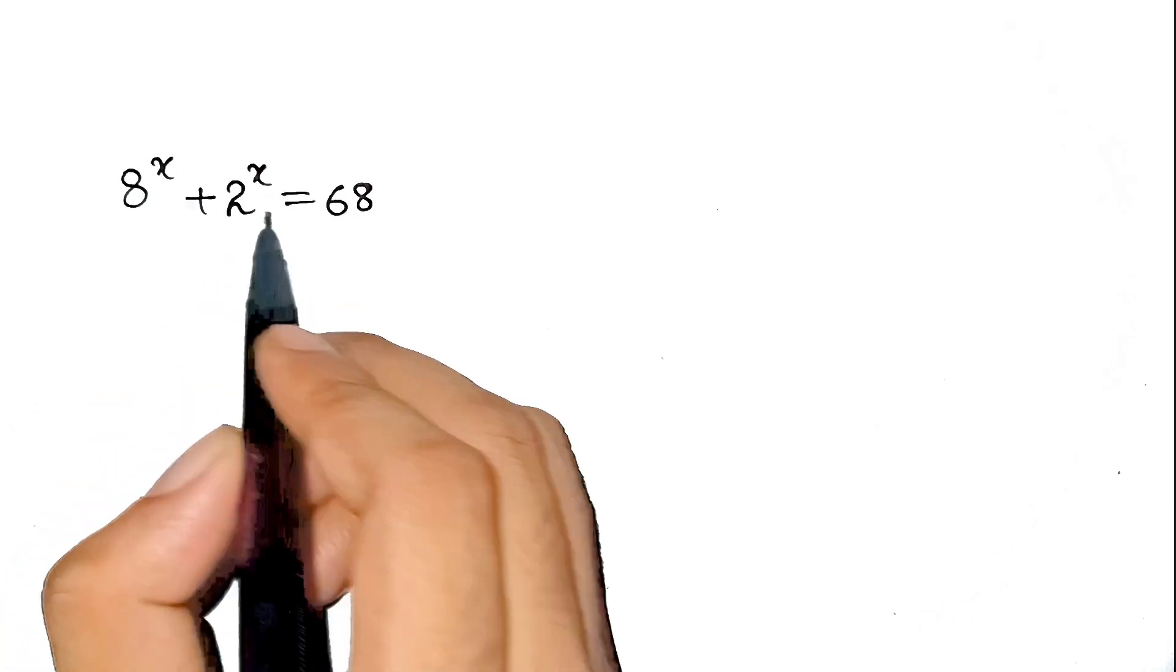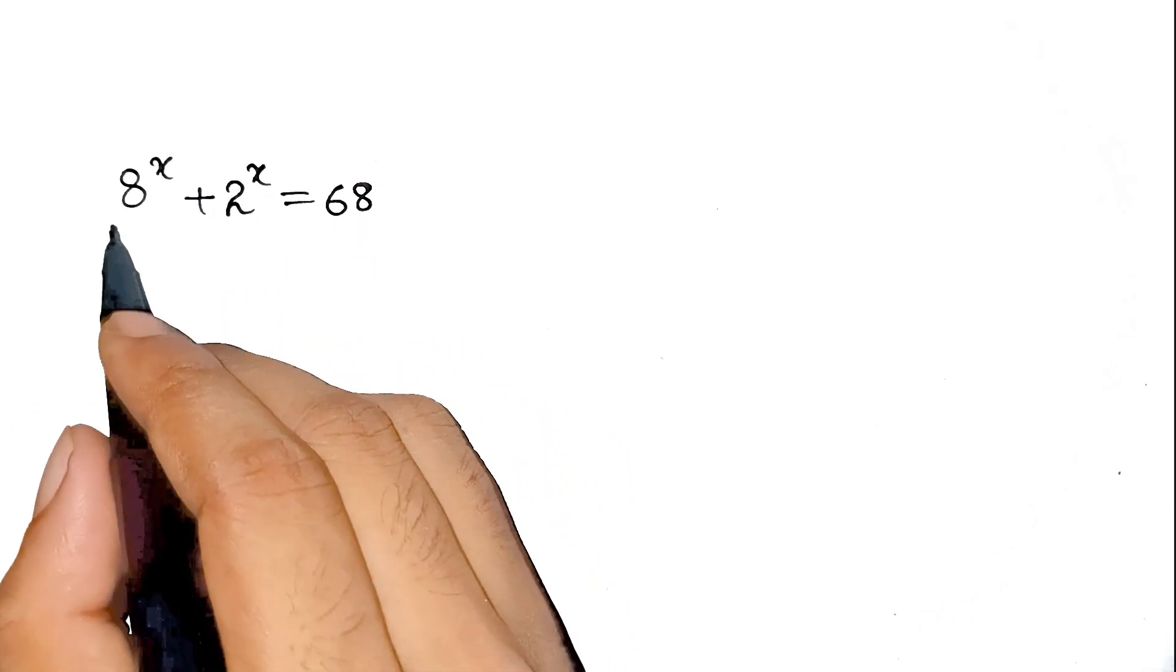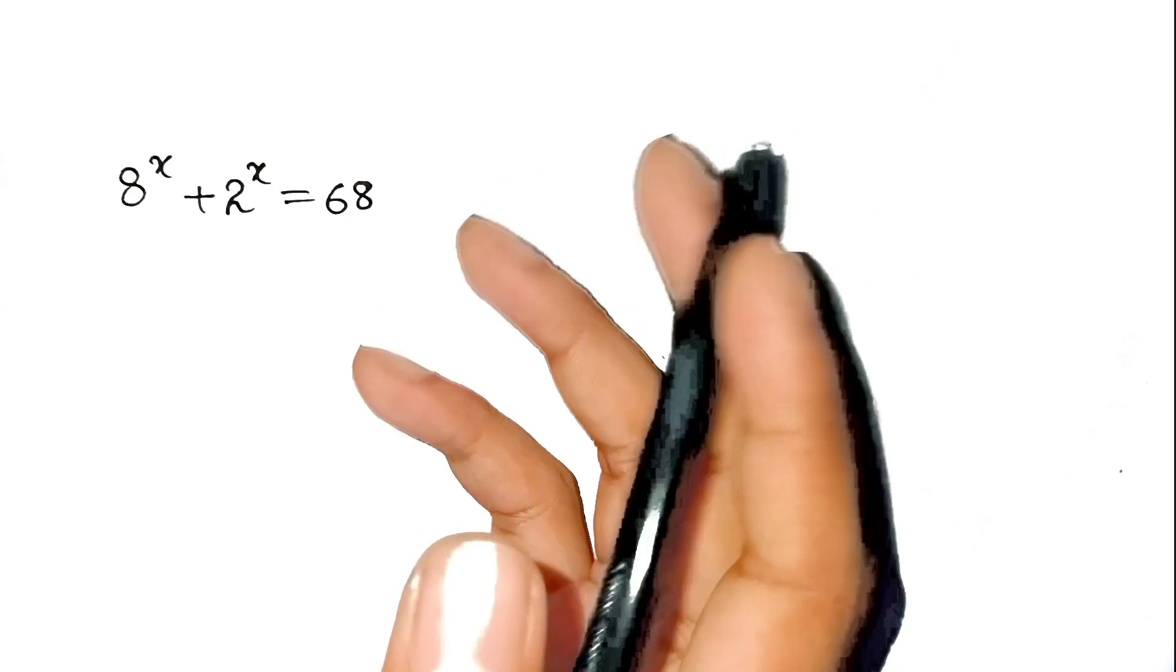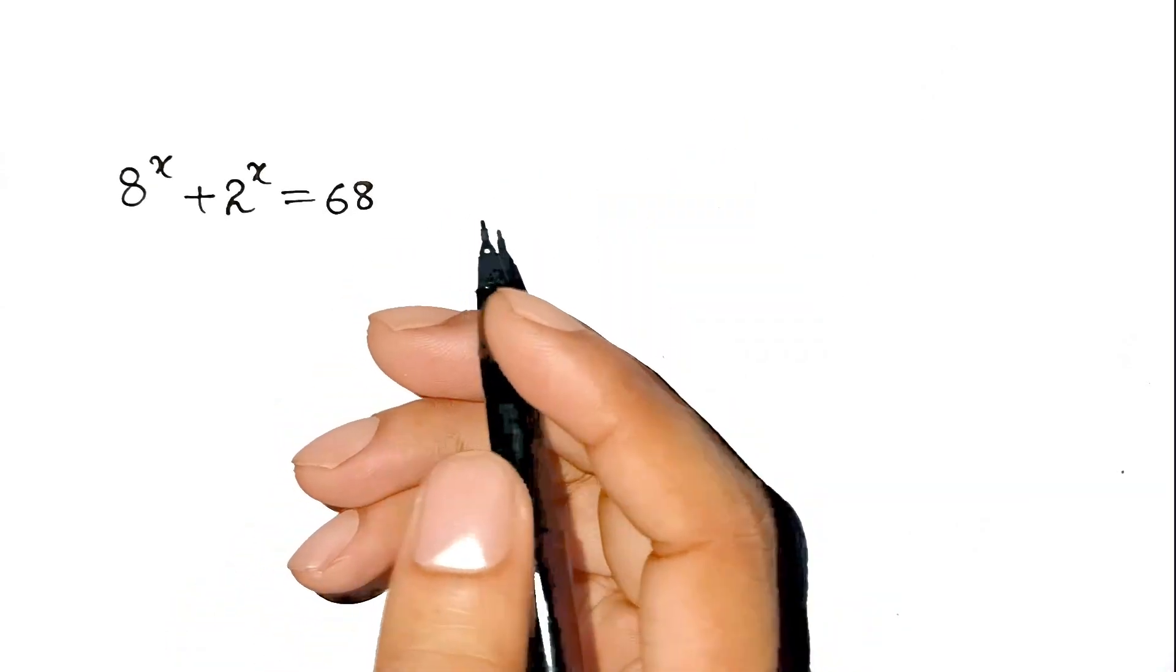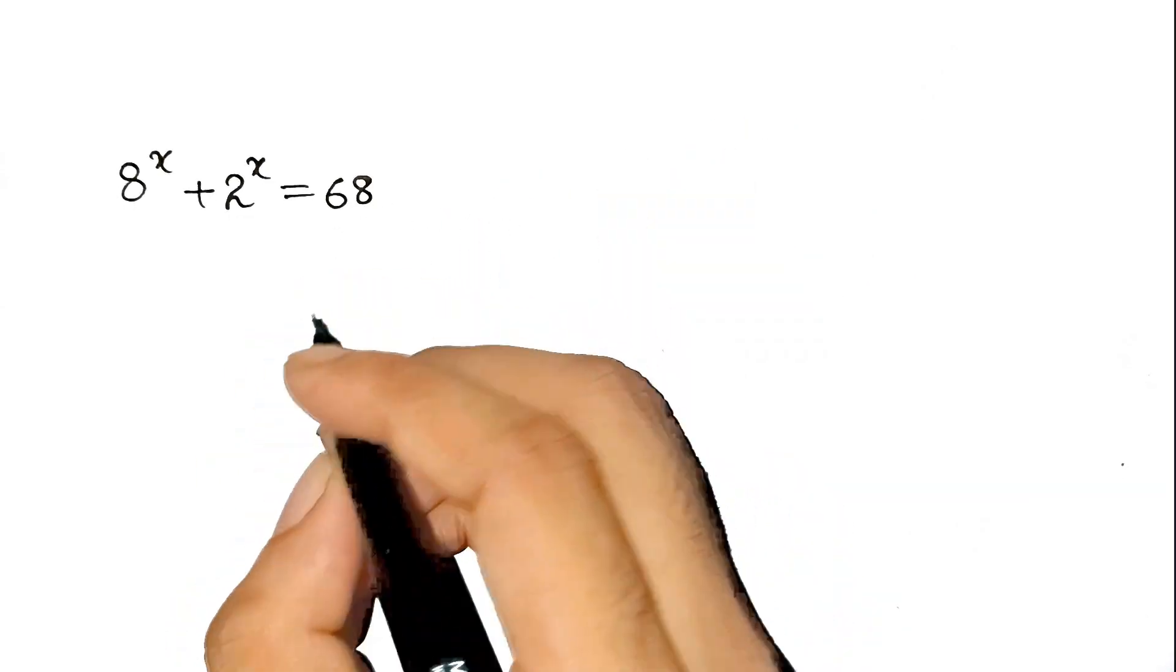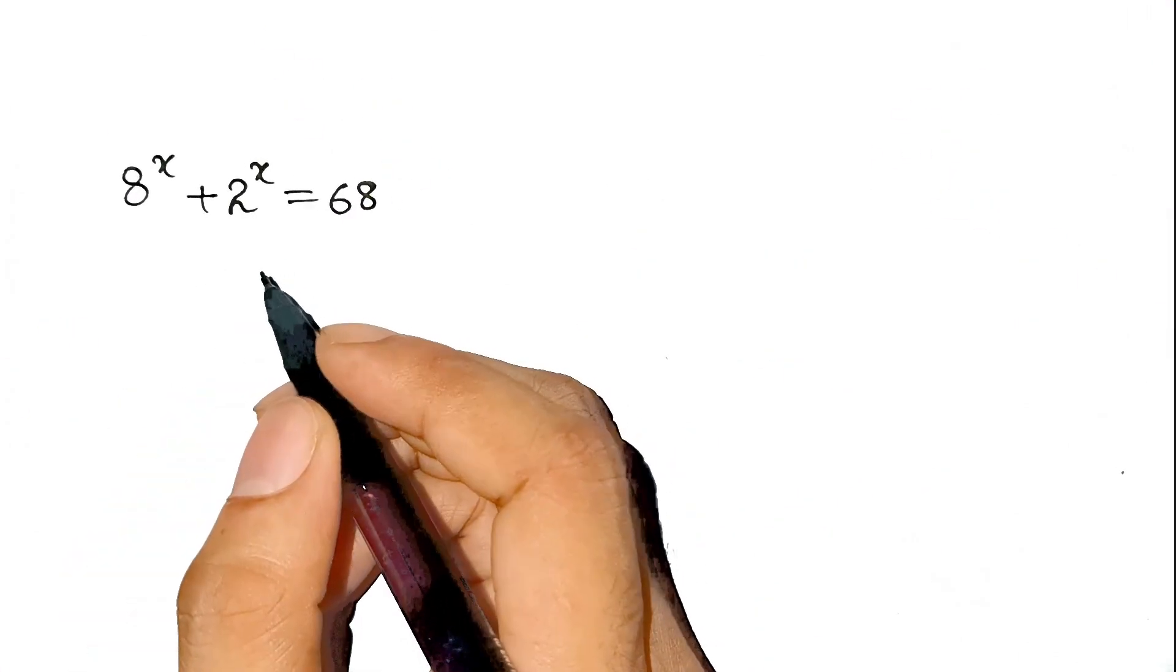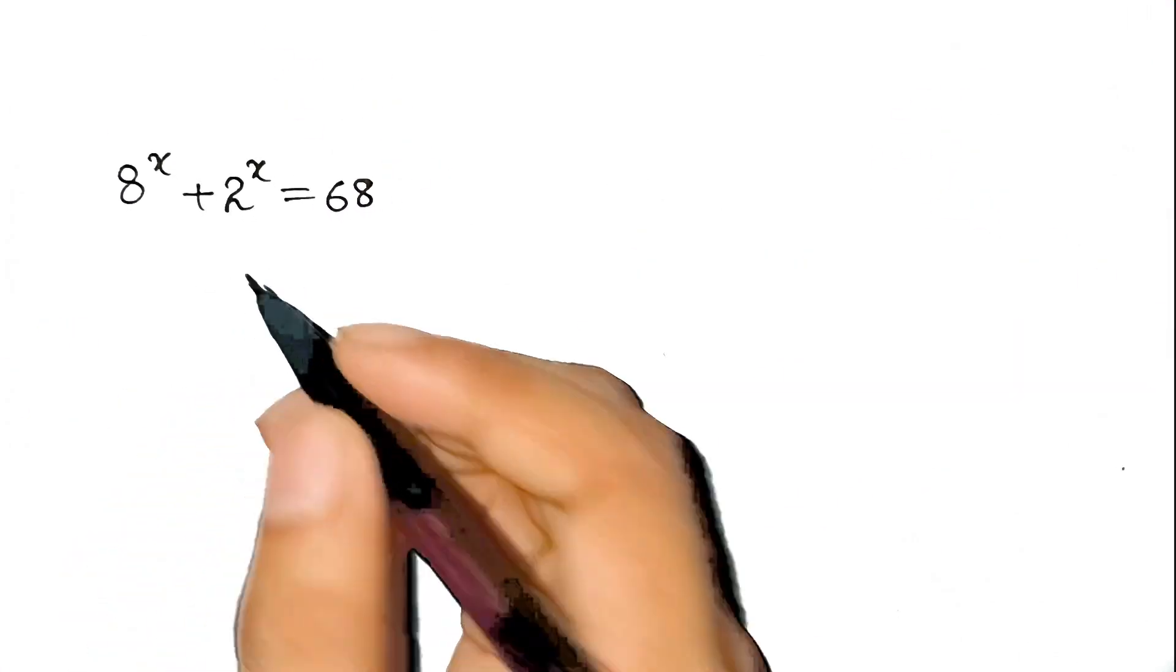8^x + 2^x = 68. Now at first glance, you're like, oh, this looks chill. I can do this in my sleep. And then you try and suddenly you're like that meme guy with all the math symbols floating around his head. Yeah, that's what this problem does. Alright, let's go step by step.